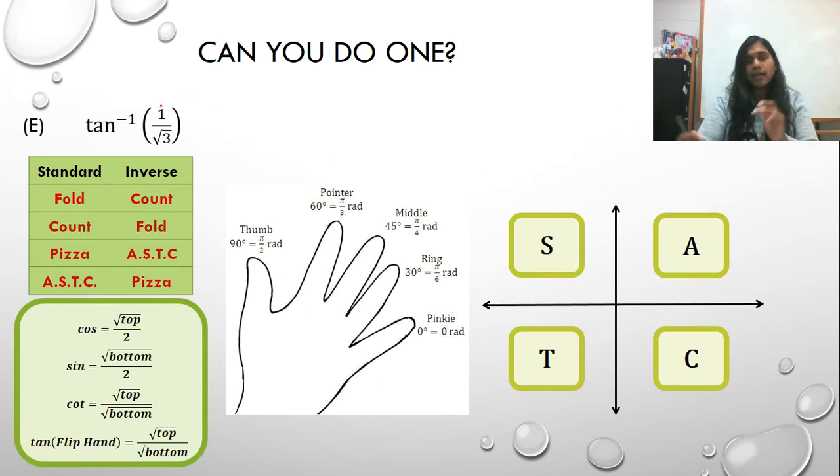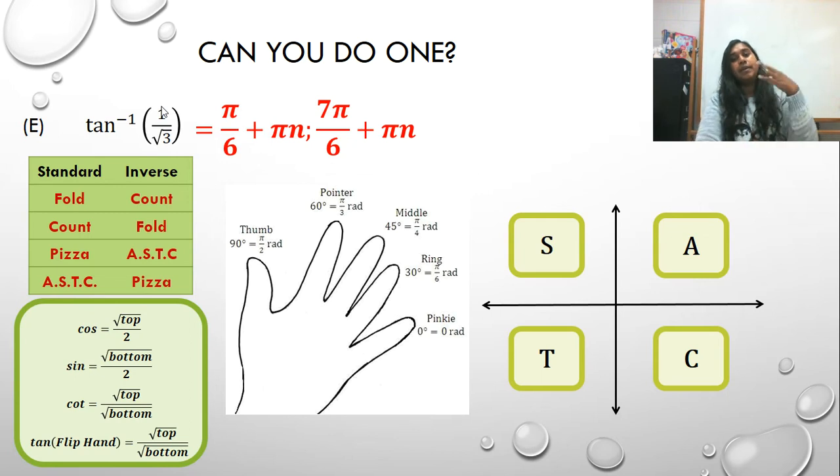All right. Welcome back. Here is your answer. So, you should have gotten down to pi 6 and then realized that you also had quadrant T or the third quadrant where you needed to answer as well. So, 7 pi over 6 was your other answer.